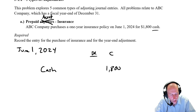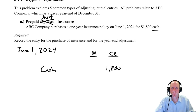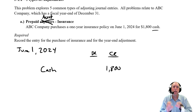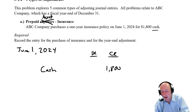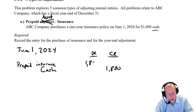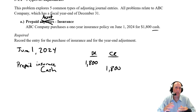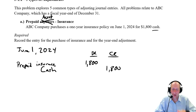Prepaid insurance is a current asset, listed alongside supplies and accounts receivable on the balance sheet. A few months go by and it's now December 31st, 2024, when I want to prepare financial statements. My books still show $1,800 of prepaid insurance, but I have to ask: do I actually have $1,800 worth left? The answer is no. I've had insurance coverage for June, July, August, September, October, November, and December — seven months.